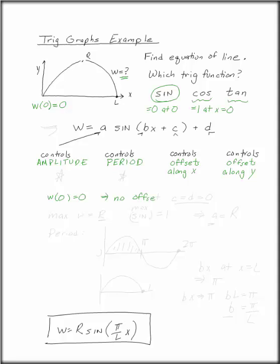The period we do have to worry about and the amplitude. We know that the maximum value for w is going to be equal to R. If we start with a basic sine function, the maximum amplitude is equal to one,